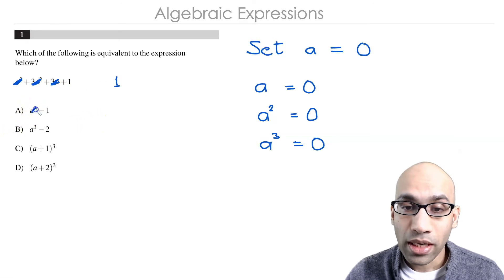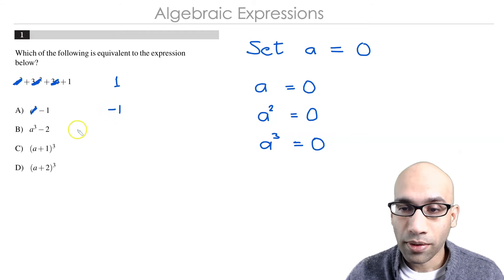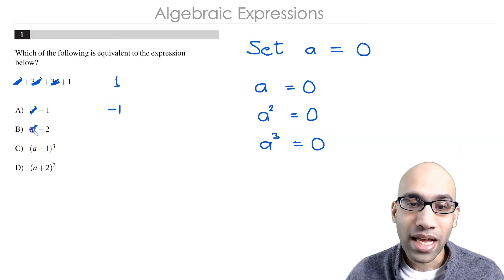Similarly, let's cancel out a³ here, and what remains is negative 1. Here you cancel out a³, and what remains is negative 2 here.